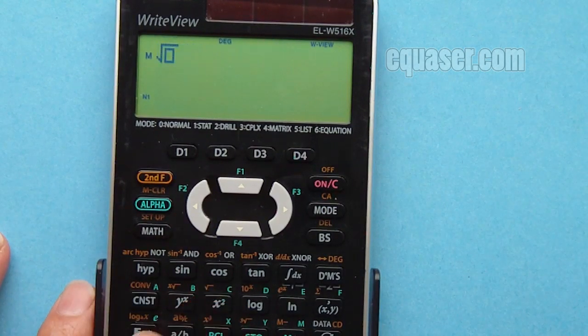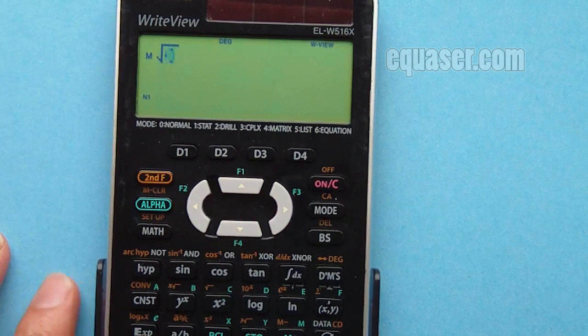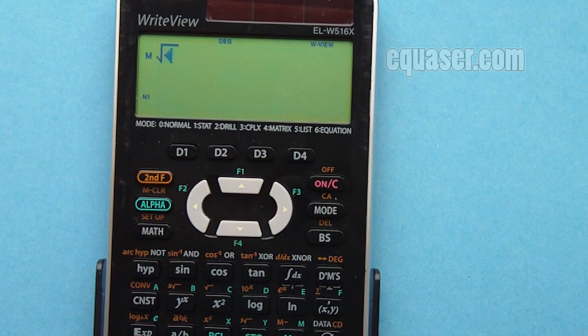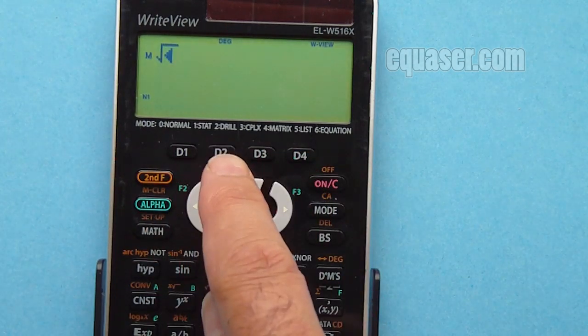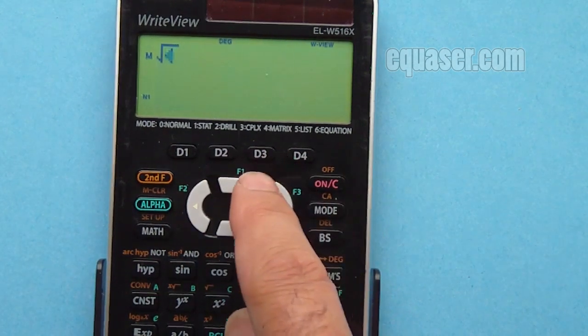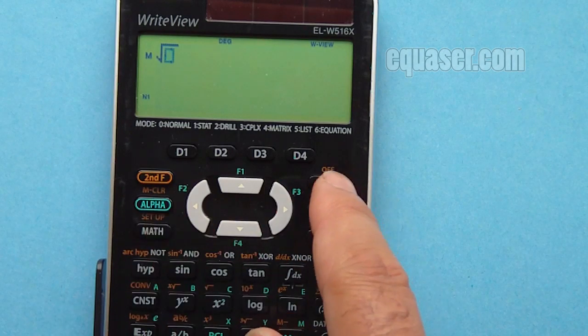Or if I want to press square root, second function and square, so I can get square root. But sometimes you don't want that - you just want to program one of these buttons to be square root or pi because you're using it a lot. So this can be done.